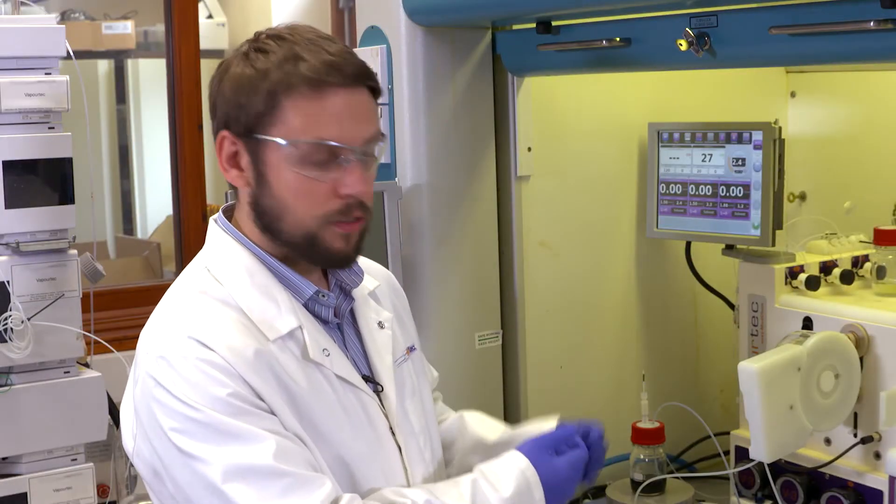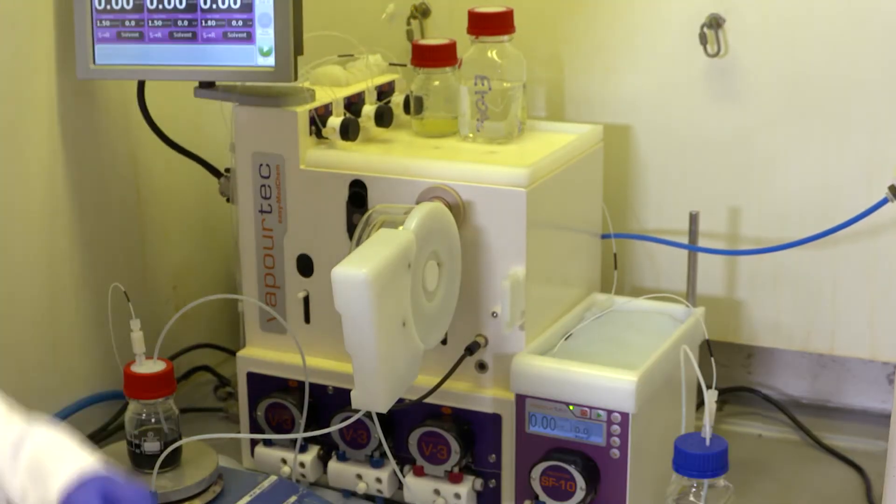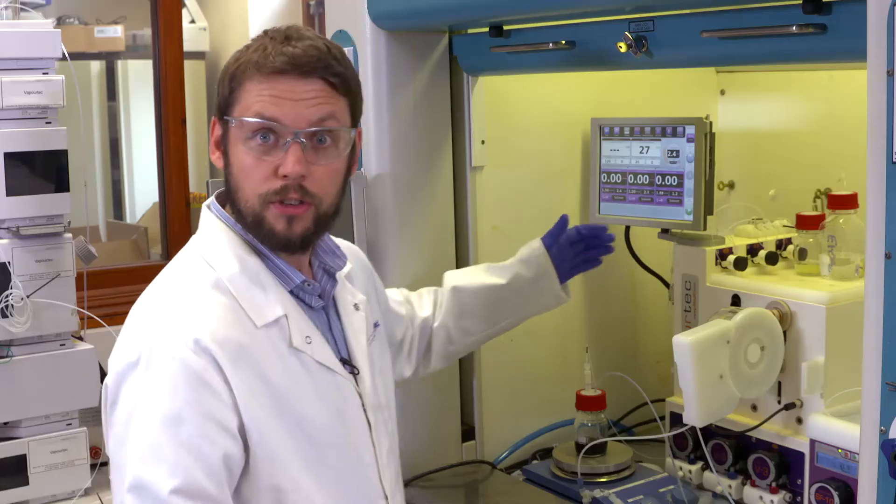I'm going to be using an E-Series and I'm using an SF10 as a back pressure regulator. So I've got my reagents and my system solvent ready on the system and I have the slurry ready. I just need to prime the pump.